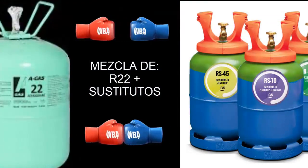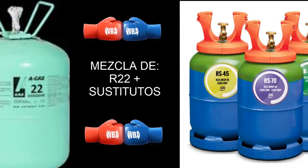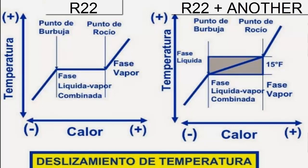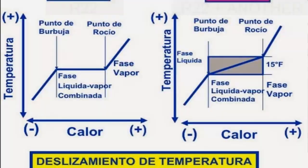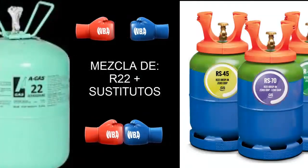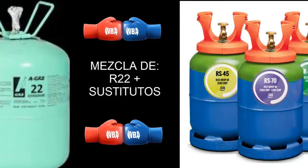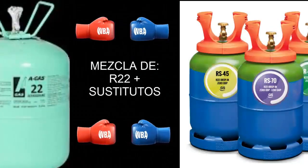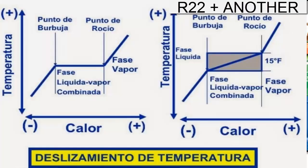Excessive slippage might occur in the resulting blend. Slippage refers to the refrigerant's temperature increase, as seen in the evaporator, for example. A high slip value, such as in the evaporator, could lead to very high temperatures at its outlet, affecting the cooling process.